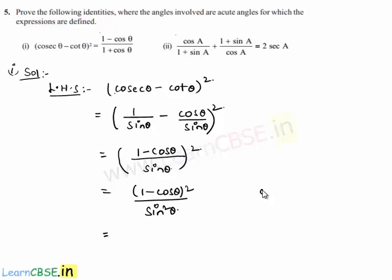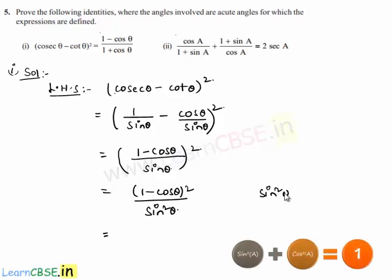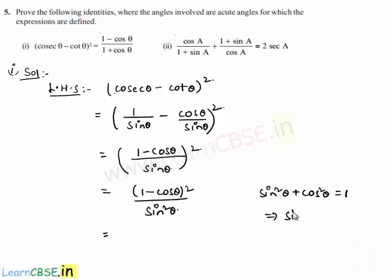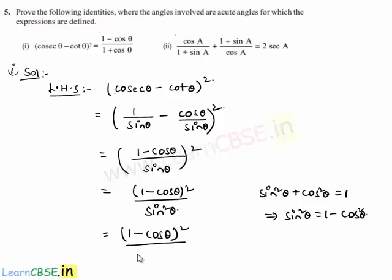From the identity sin²θ + cos²θ = 1, we have sin²θ = 1 - cos²θ. Substituting in the denominator, we get (1 - cos θ)² / (1 - cos²θ).